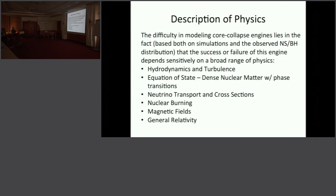In core collapse supernova, just as in type 1a supernova, we don't have to worry about photon transport in the engine. The radiation is trapped. When you have a density of 10 to the 14 grams per centimeter cubed, the average photon is not moving more than about 10 to the minus 14 centimeters, so it's not really moving during any time in the calculation. But neutrinos have a much shorter mean-free path and will travel quite far in the course of a calculation.